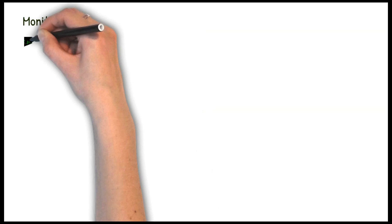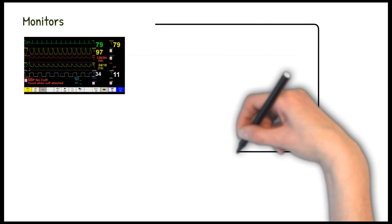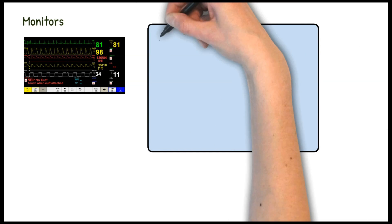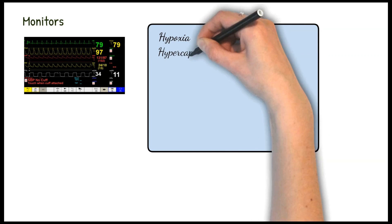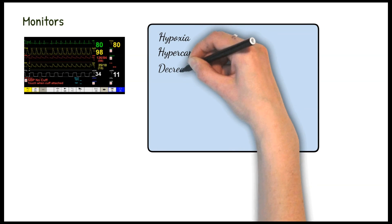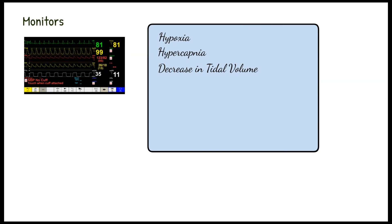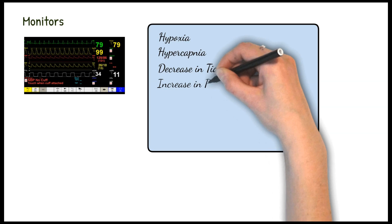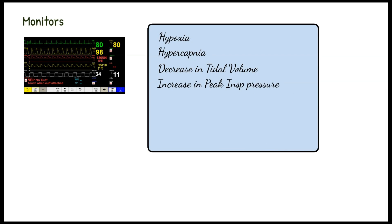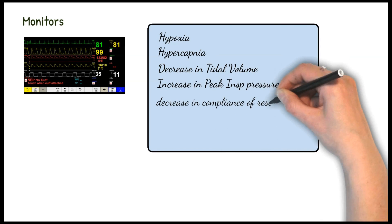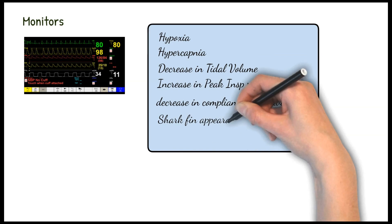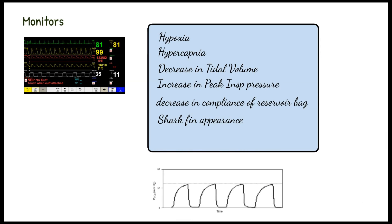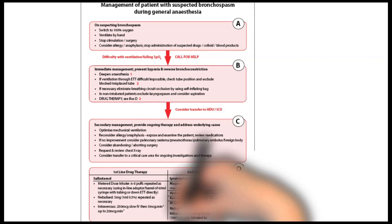Now what changes will you see on the monitor during anesthesia? There can be a decrease in saturation and hypoxia due to bronchospasm. There will be accumulation of CO2 leading to hypercapnia. On ABG there will be a decrease in tidal volume, as there is decreased chest movement. There can be an increase in peak inspiratory pressure. Compliance of the reservoir bag will decrease. On capnography, there will be a characteristic shark fin appearance in patients undergoing surgery who are developing bronchospasm.